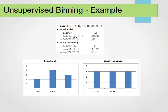For equal frequency binning, we again decide k — let's say three groups — and each group will have approximately the same number of values. Splitting over three, the first bin gets the first three values: 0, 4, 12; the second bin gets 16, 16, 18; and the third bin gets 24, 26, 28. Notice each bin has the same number of elements.